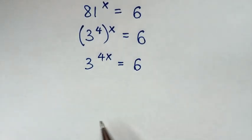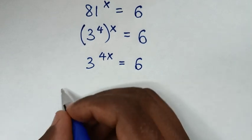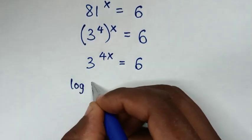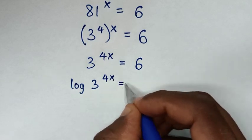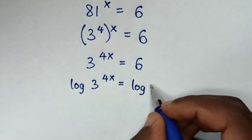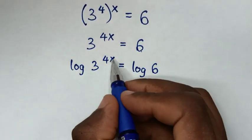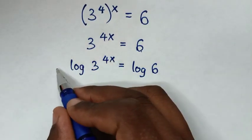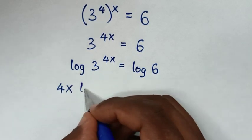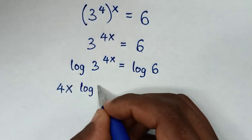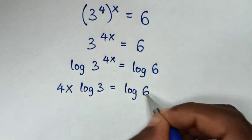Then in the next step, we'll apply log to both sides. So it will be log of 3^(4x) is equal to log of 6. Then the power of 4x will move to the front, so it will be 4x · log(3) is equal to log(6).